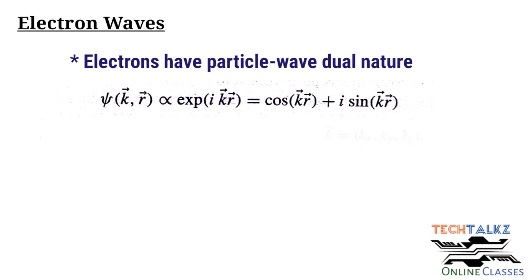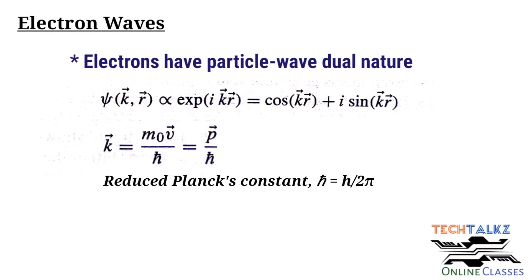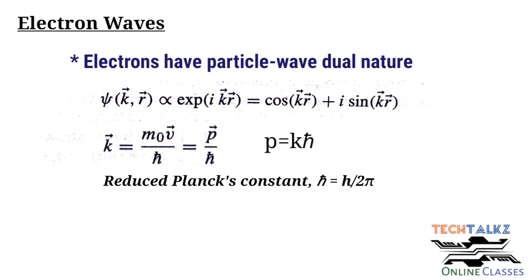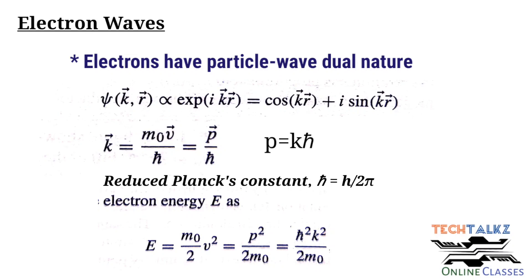The wave vector k can be expressed as mass times velocity divided by h-bar, where m is the mass, v is the velocity of the particle, and h-bar is the reduced Planck's constant equal to h divided by 2π, where h is the Planck's constant. This equation can also be written as p divided by h-bar, where p is the electron momentum, or equivalently, momentum p is equal to k times h-bar.